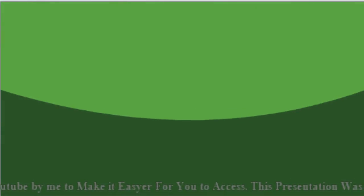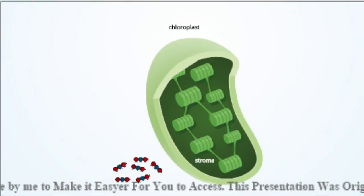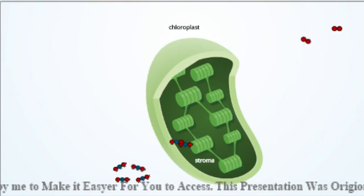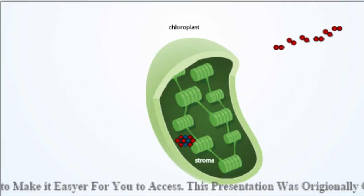The light-independent reactions, or Calvin cycle, are the second stage of photosynthesis. Carbon dioxide molecules enter the cycle and are added to five-carbon molecules. Six-carbon molecules are formed.